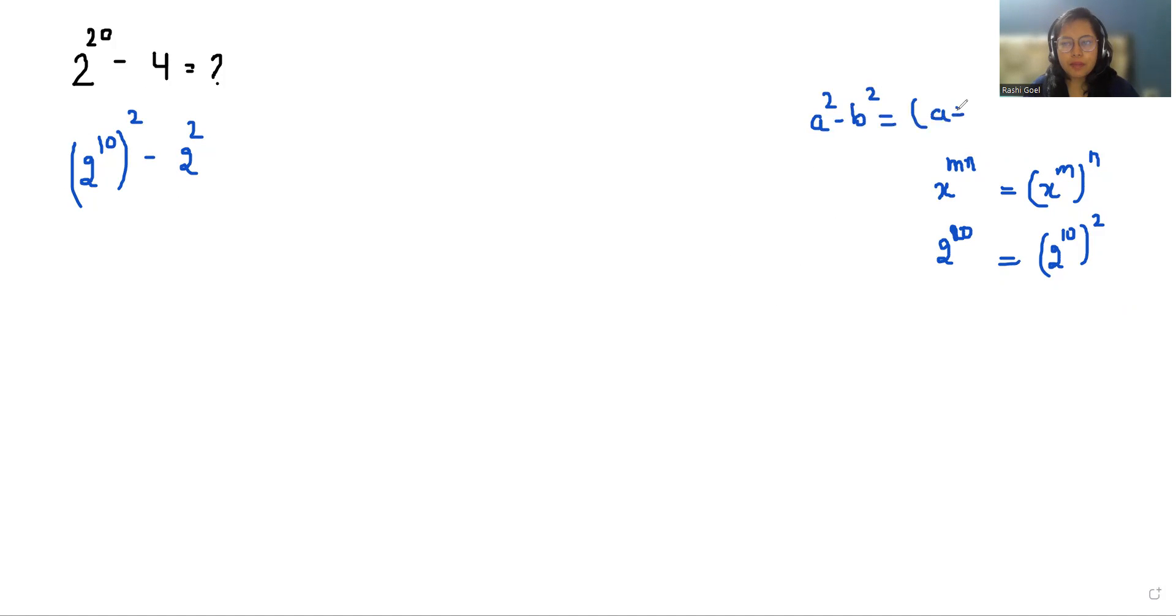So our a is 2 power 10 and b is 2. So we can write it as 2 power 10 plus 2 times 2 power 10 minus 2.